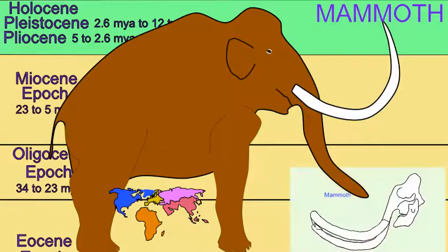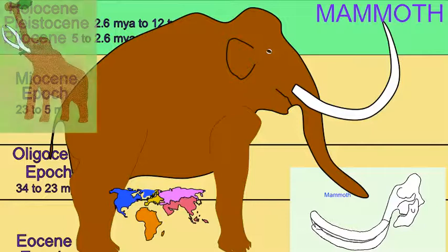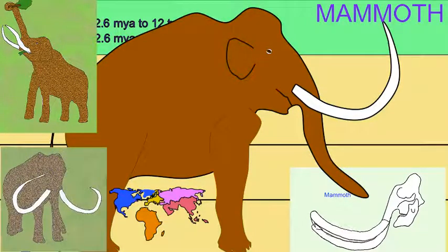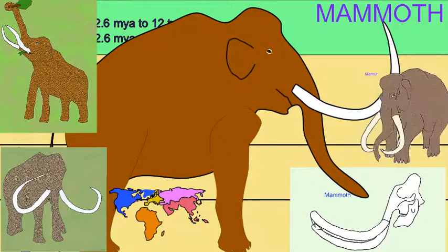Mammoths could stand more than four meters tall at the shoulder and could possess elongated tusks, which were prominently curved. The woolly mammoth possessed a thick coat of coarse fur to allow it to inhabit northern regions during the Ice Age.